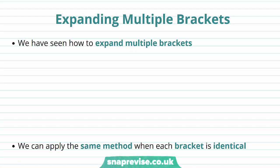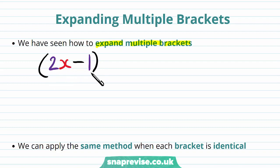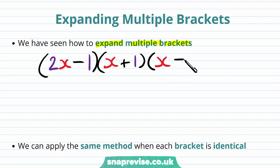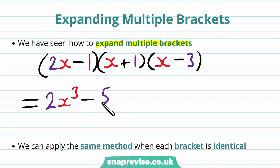So how exactly can we generalize the process of expanding multiple brackets? We have seen how to expand multiple brackets. Let's say we want to expand the product (2x minus 1) multiplied by (x plus 1) multiplied by (x minus 3). We have seen that we can expand this out, and when we do so we get precisely 2x cubed minus 5x squared minus 4x plus 3.